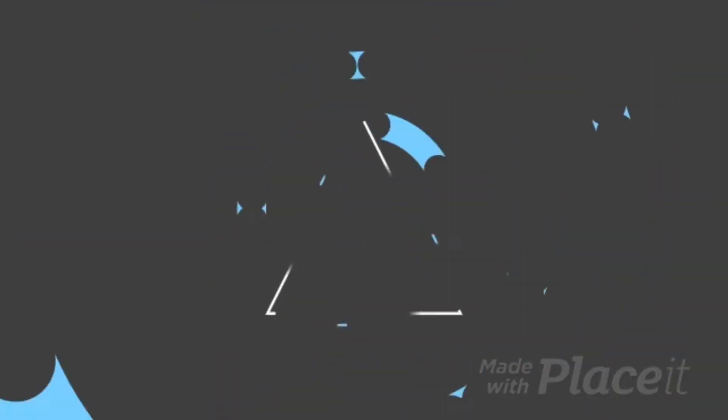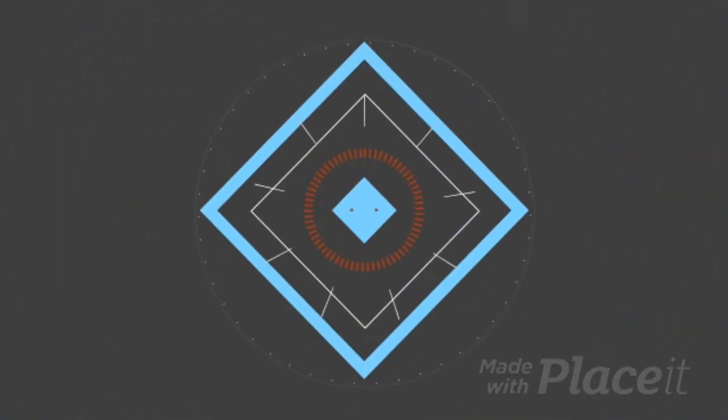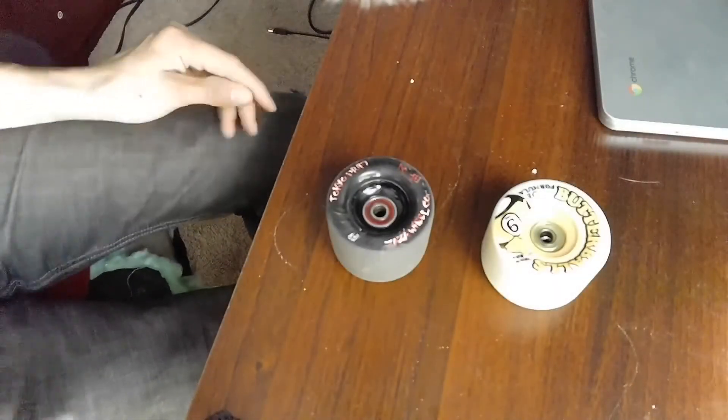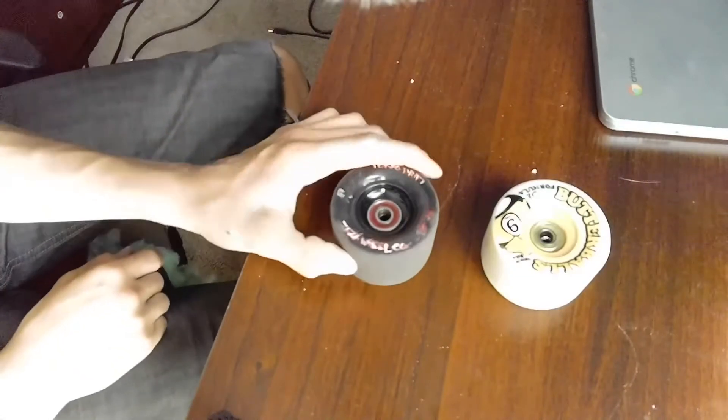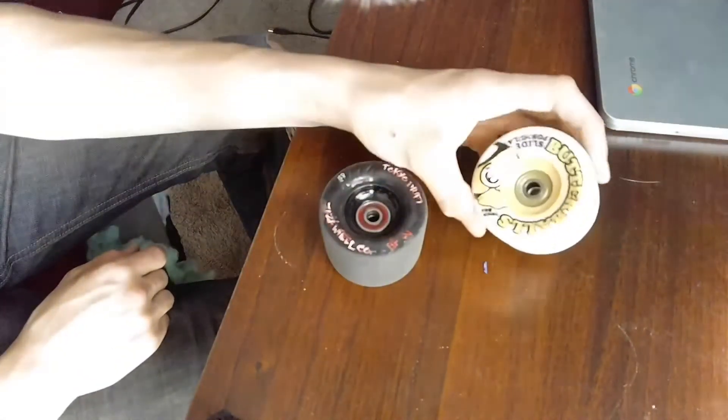If you guys had to pick one, which one would you pick? Alright guys, so we have two lovely wheels here: The Tokyo Drift and the Sector 9 Butterball.